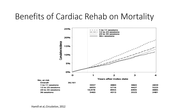Cardiac rehab follows a dose-dependent relationship — the more sessions you perform, the better the benefits. Looking at mortality at one, three, and four years: individuals who finish 36-plus sessions have the lowest mortality. Even doing 24 to 35 sessions is better than 12 to 23, and even a few sessions provide some benefit. Very few interventions follow this relationship where you get something even from a little. Compliance and getting patients to finish a full course of rehab is huge.